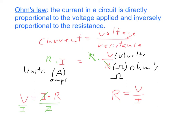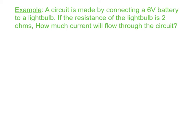Let's take a look at an example. A circuit is made by connecting a 6-volt battery to a light bulb. If the resistance of the light bulb is 2 ohms, how much current will flow through the circuit? And of course, as you'll notice, this should be a lowercase h.